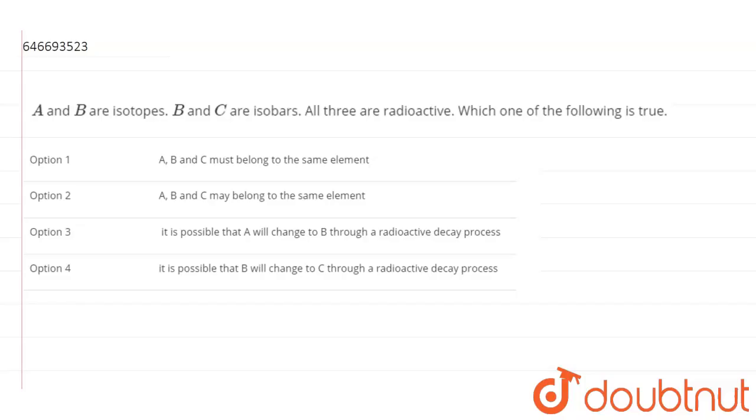A and B are isotopes, B and C are isobars, all three are radioactive. Which one of the following is true?